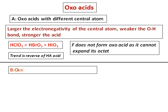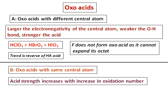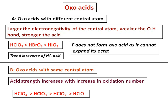For oxoacids with the same central atom, acid strength increases with increase in oxidation number of the central atom. For example, considering perchloric acid: HClO₄ with oxidation state +7 is stronger than HClO₃ with +5, which is stronger than HClO₂ with +3, which is stronger than HClO with oxidation state +1 — the weakest of all these oxoacids.